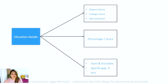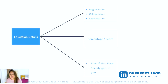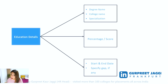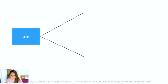In your education section, include your degree name, college name, and specialization. Many candidates miss the specialization — don't just write 'Bachelor of Engineering'; specify whether it's Computer Science, Information Science, Electronics Engineering, etc. Also include your percentage or CGPA, and the start and end dates of your course. If there is any gap in your CV, that's completely fine — just call it out and mention the reason.